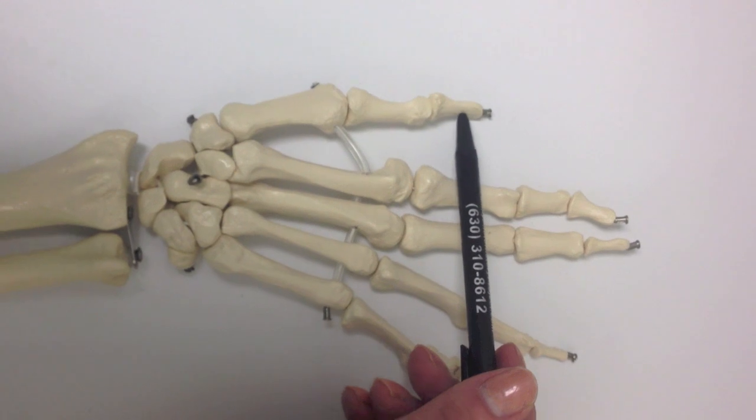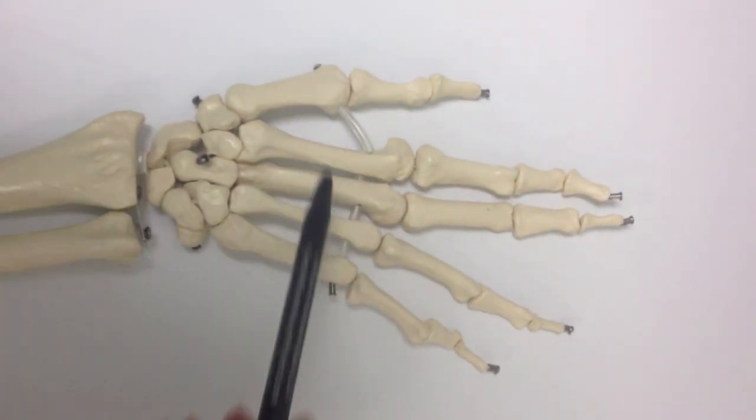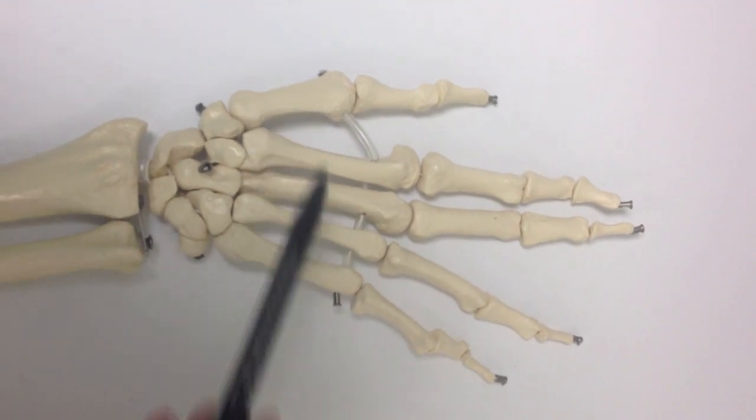Then we have metacarpals. Metacarpals are numbered one through five from the thumb to the pinky, so metacarpal one, metacarpal two, and so on.